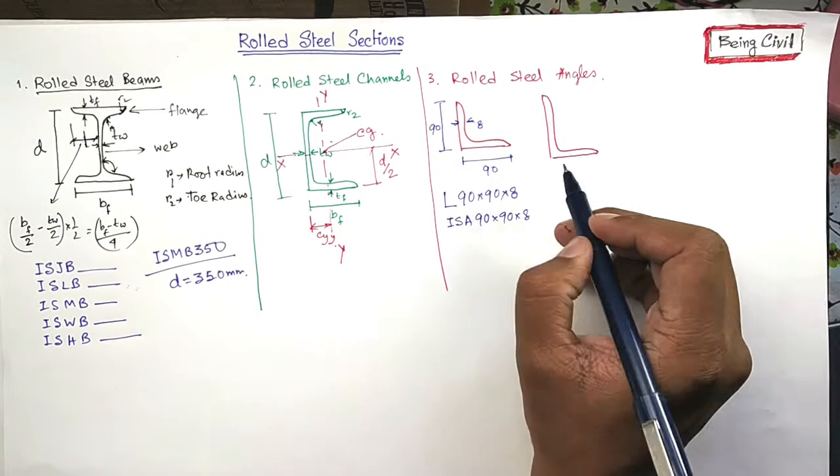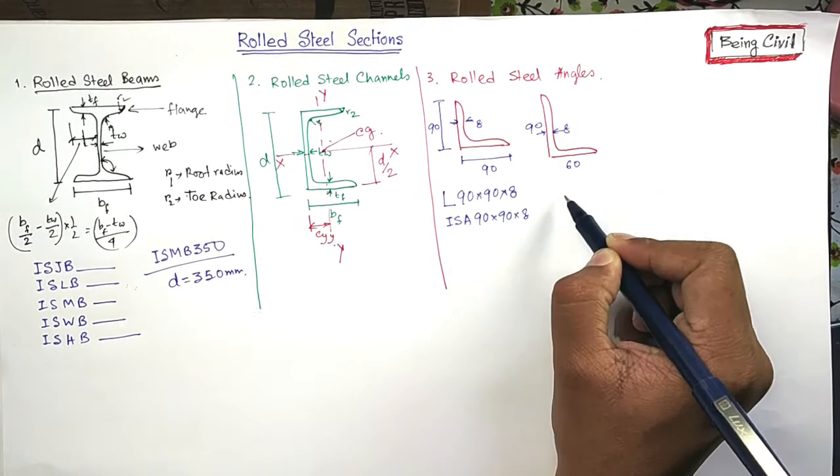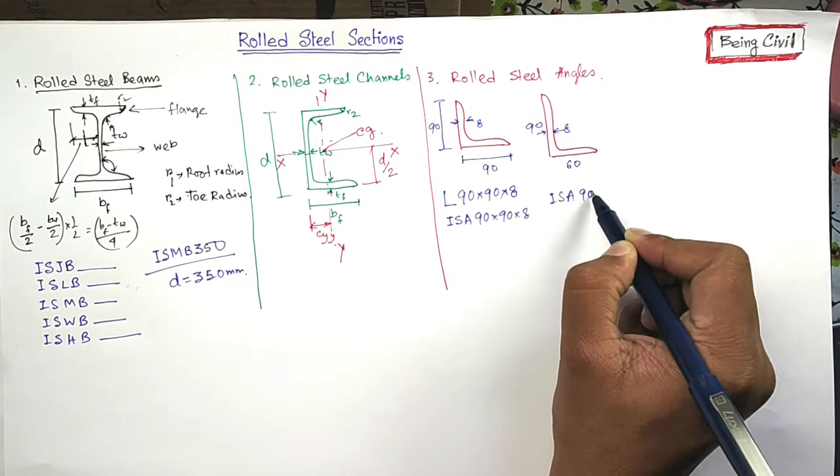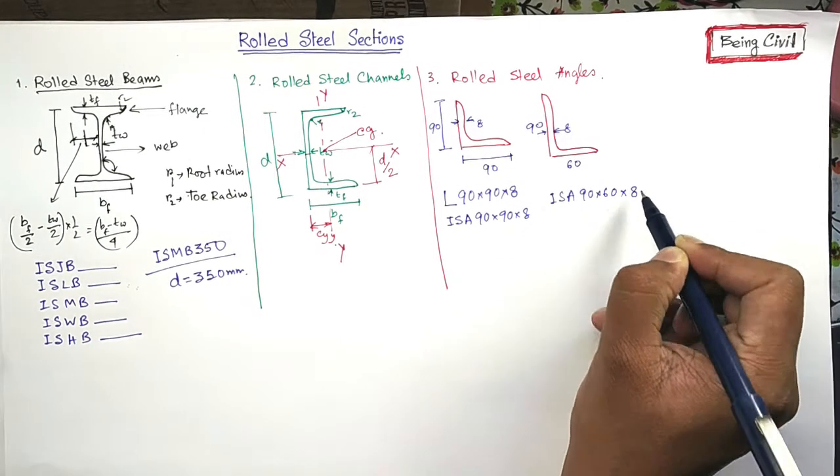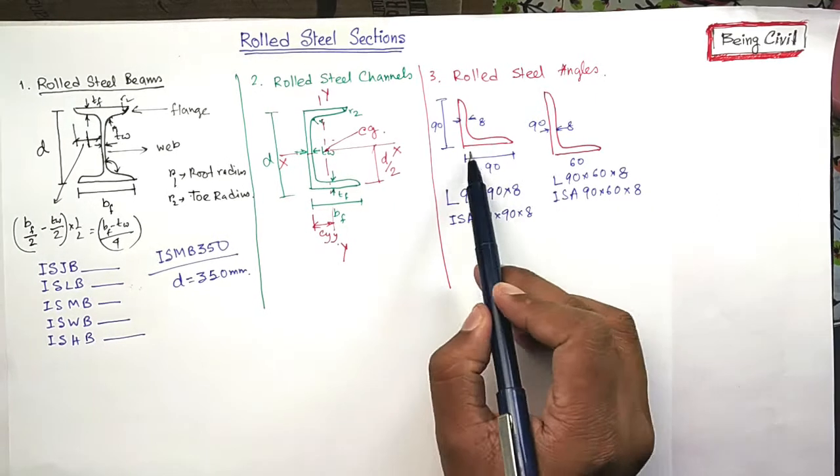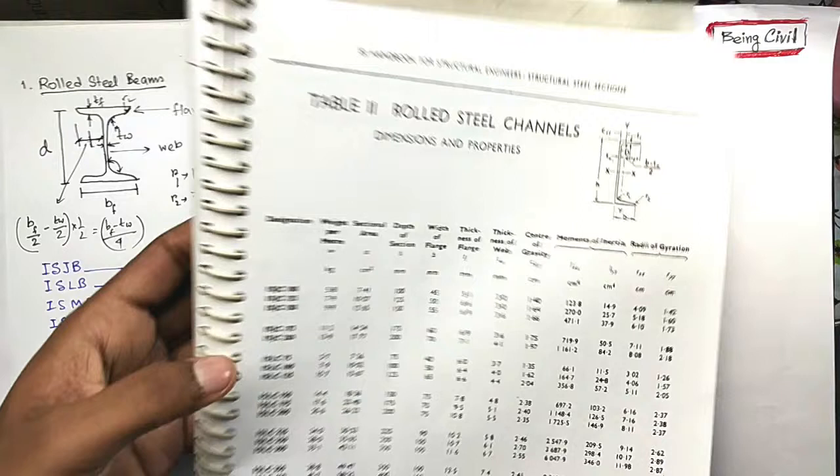And for unequal angles, suppose this is 90, this is 60 and this distance is 8. So it can be written as ISA 90 by 60 by 8. Or you can also write as E like this. All these properties can be found out from SP 6.